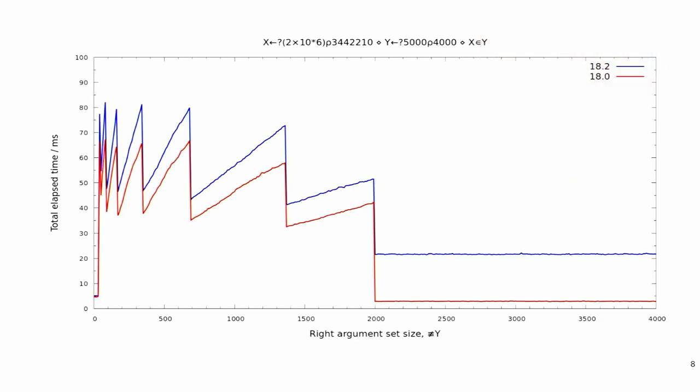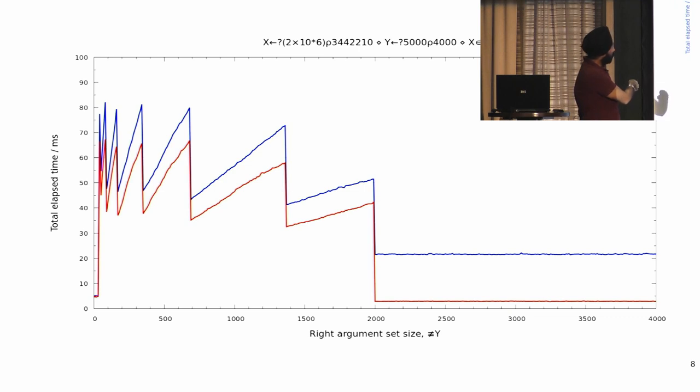Now another example. Another membership operation. Slightly different inputs. Again, random. You don't really need to concentrate on what these inputs are. This time, we're varying the right-hand argument to the membership operation. So we're taking some constant set and asking the amount of execution time it takes to run on a variable right-hand set. This time, 18.0, again in red, that's the bottom curve here, is faster than 18.2, which is the blue curve, which is the higher curve. That's the good thing. However, clearly there's something interesting going on.